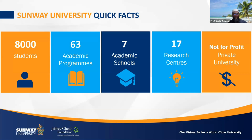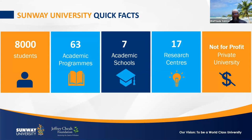These are some statistics about Sunway University quick facts. It is a small private university, but very potential and promising — 8,000 total students, 63 academic programs, seven academic schools or faculties, and most importantly 17 research centres. Sunway University is investing heavily in research, with a vision to be world class. That is also the reason I joined Sunway University.